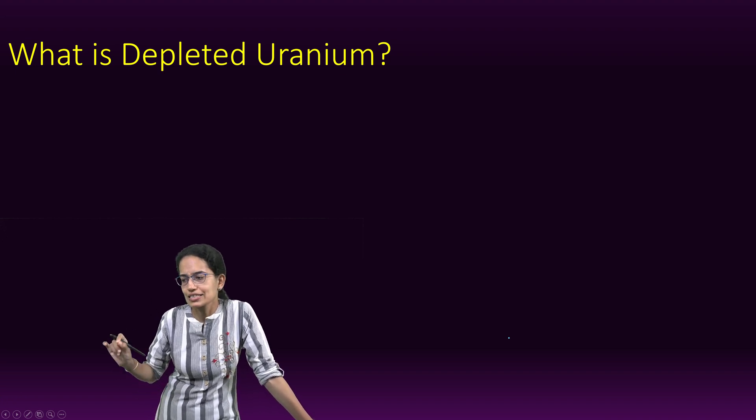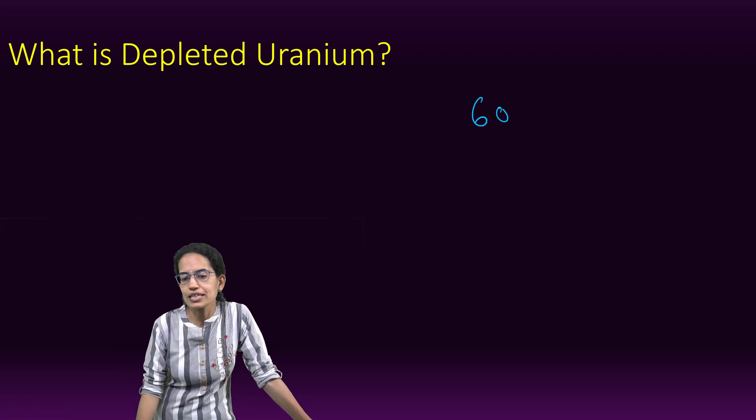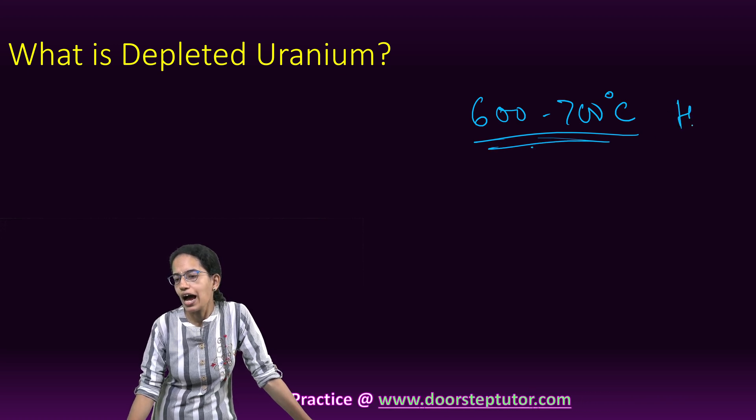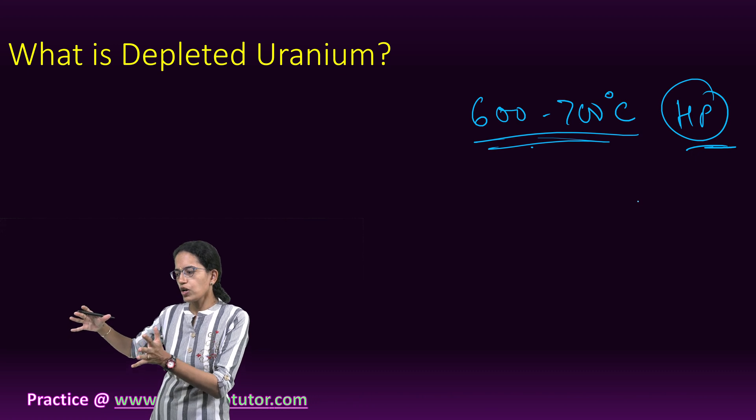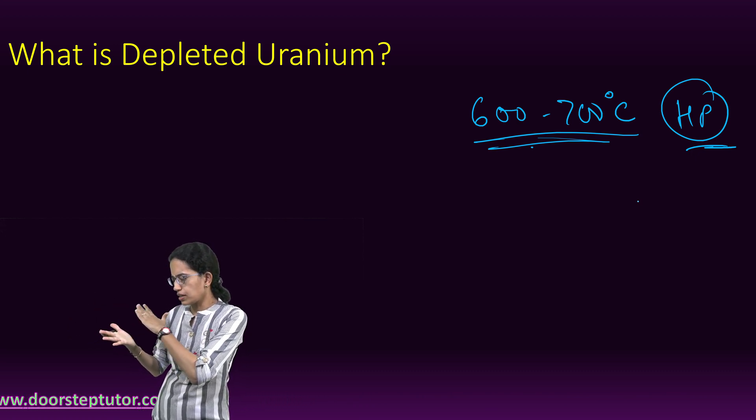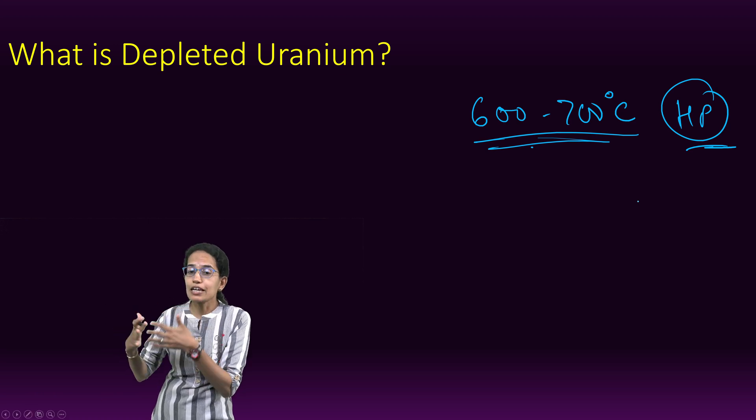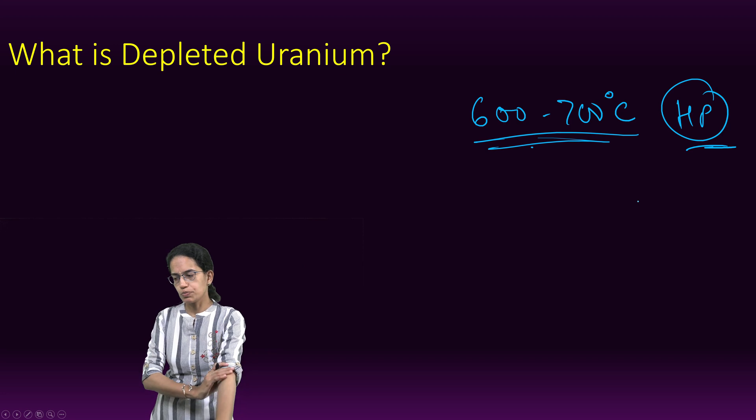The most important property is that it self-ignites at a temperature of 600-700 degrees Celsius under high pressure, which gives it the capability to penetrate through armor plates. Therefore, it is used specifically for military and defense purposes.